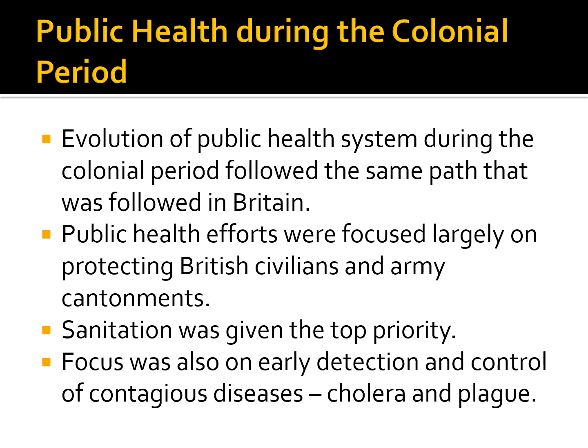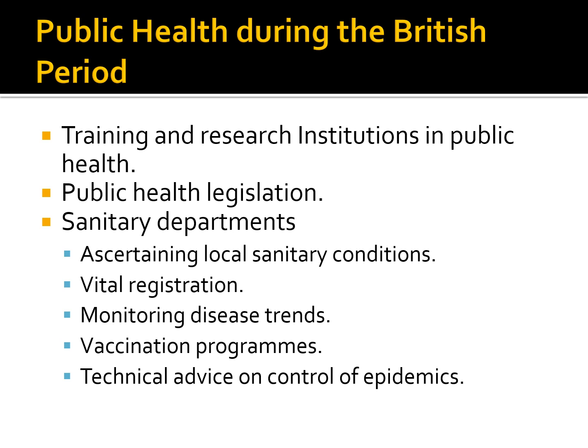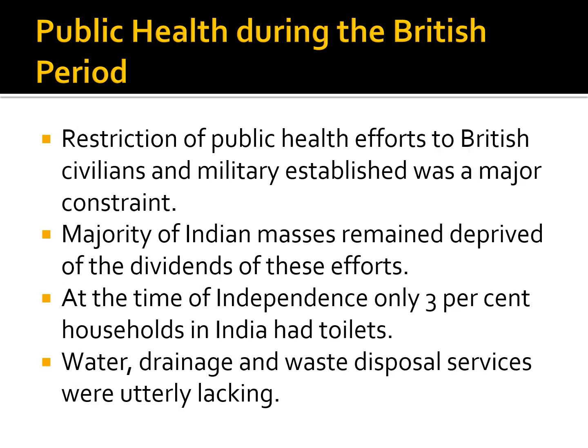During the colonial period, the evolution of the public health system followed the same path as in Britain. Public health efforts were focused largely on protecting British civilians and army contingents. Sanitation was given top priority, and focus was also given to early detection and control of contagious diseases such as cholera and the plague. Training and research institutions in public health were established, public health legislations were put in place, and sanitary departments were established. These covered local sanitary conditions, vital registration, monitoring disease trends, vaccination programs, and technical advice on control of epidemics. However, public health efforts were restricted to British civilians and military, which was a major constraint.